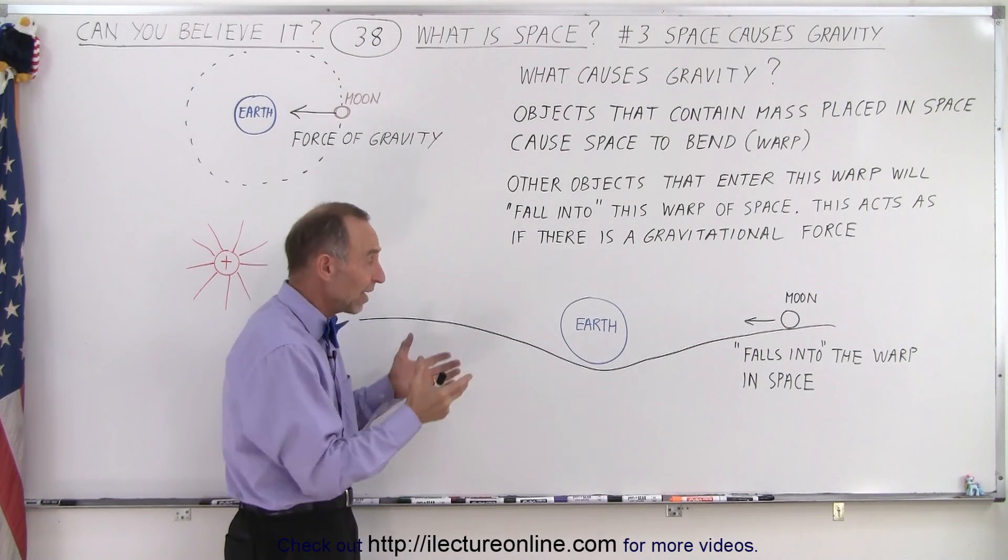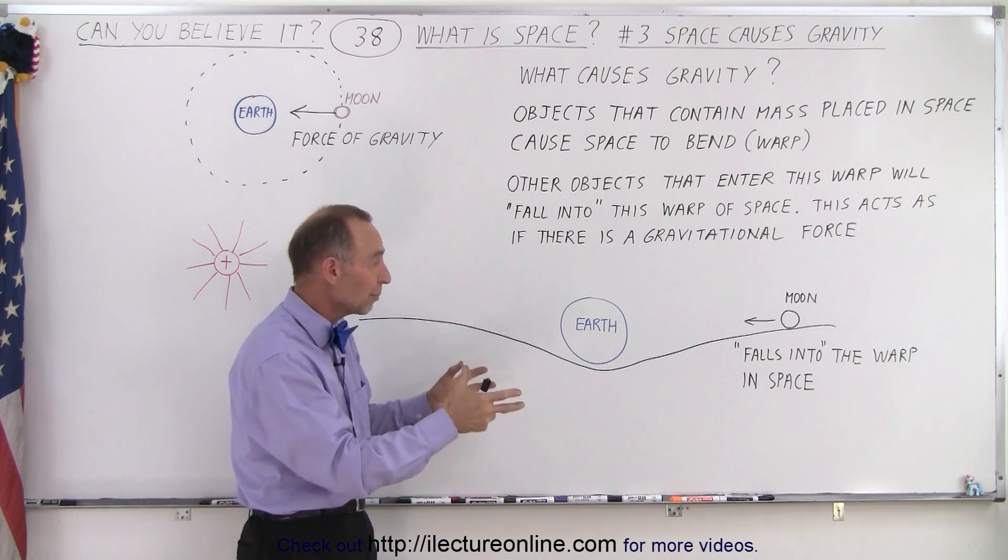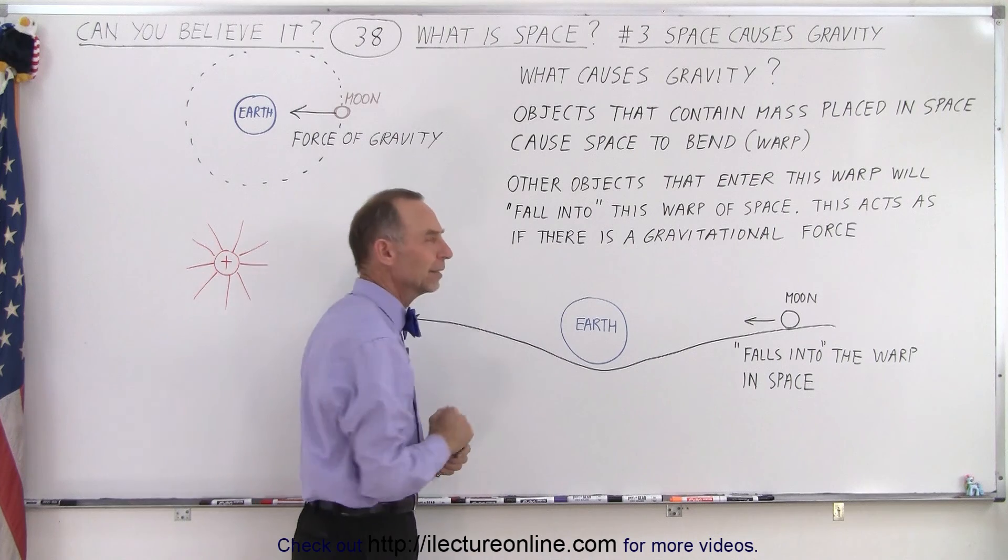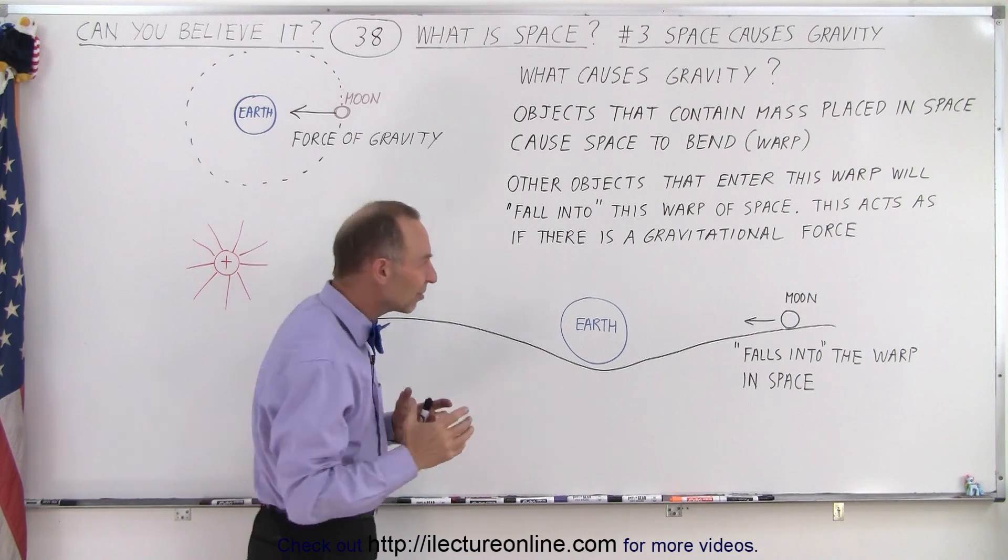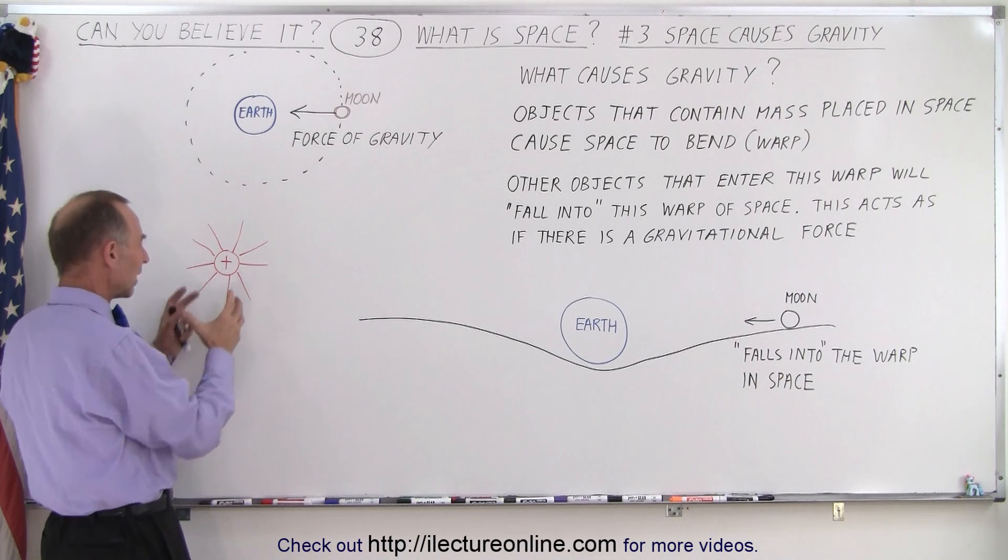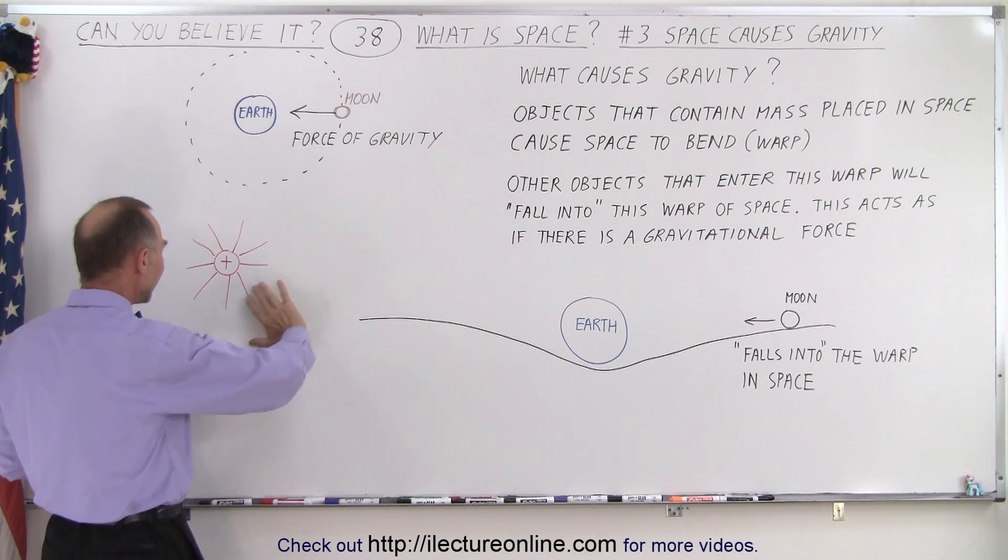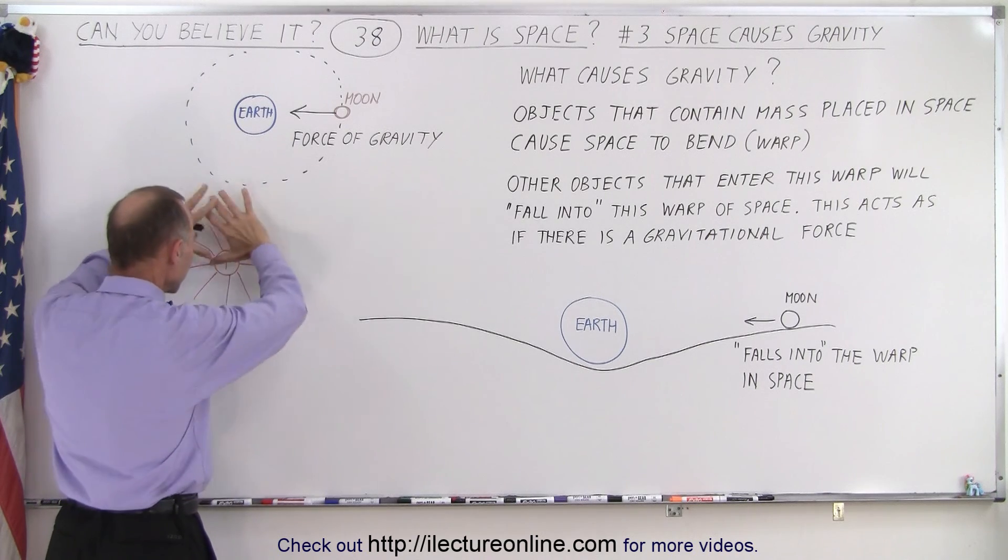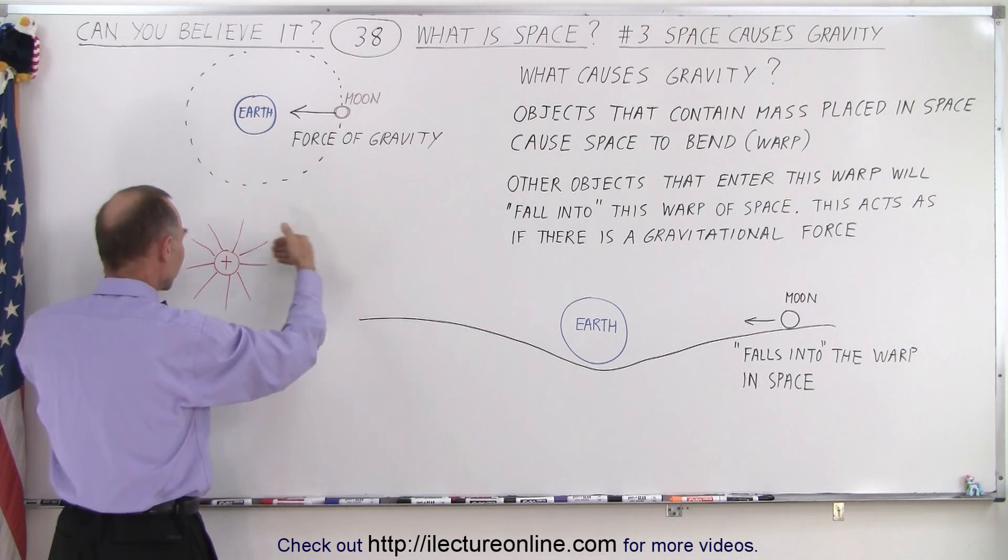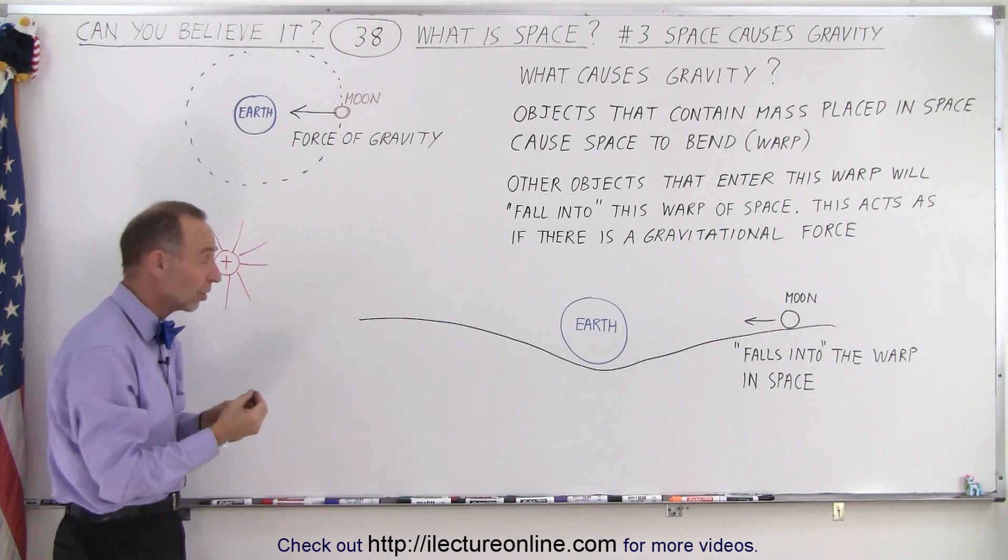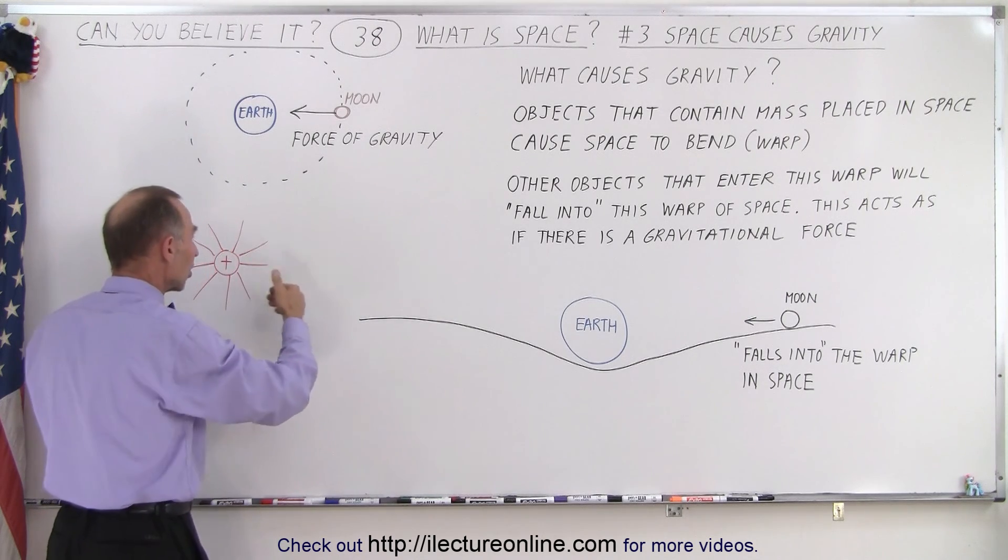So gravity is actually caused by having an object placed into space which does something to space around it. Probably somewhat similar to what happens when you place a charge in space. When you have a charge object that's in space, it creates an electric field. It does something to space around it, and any other object coming near that charge object will either be repelled if it's another positive charge, or attracted if it's a negative charge.